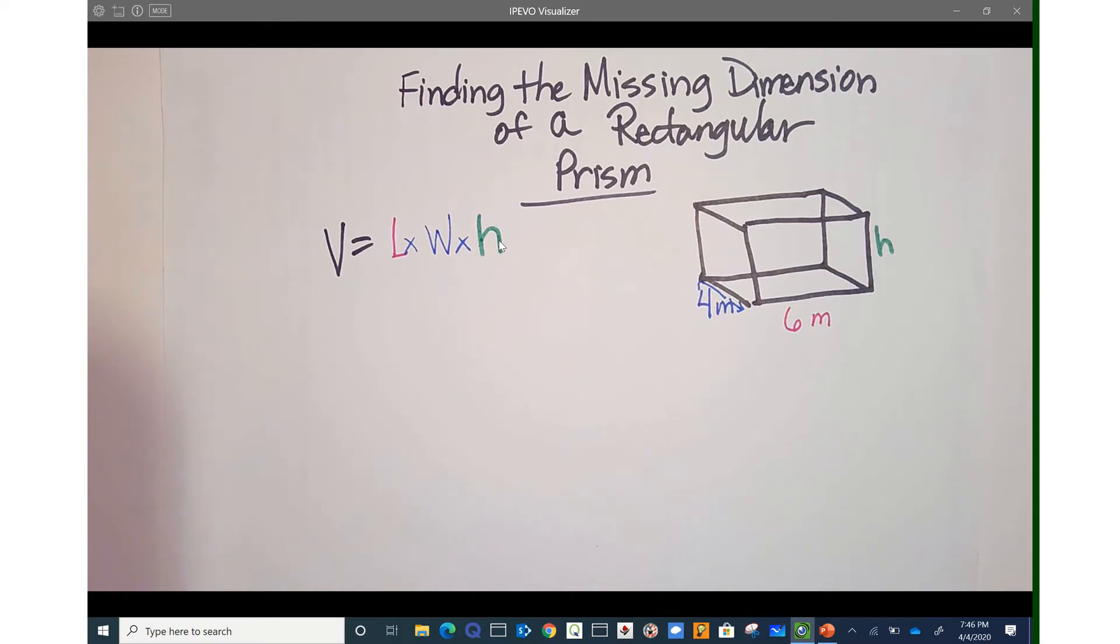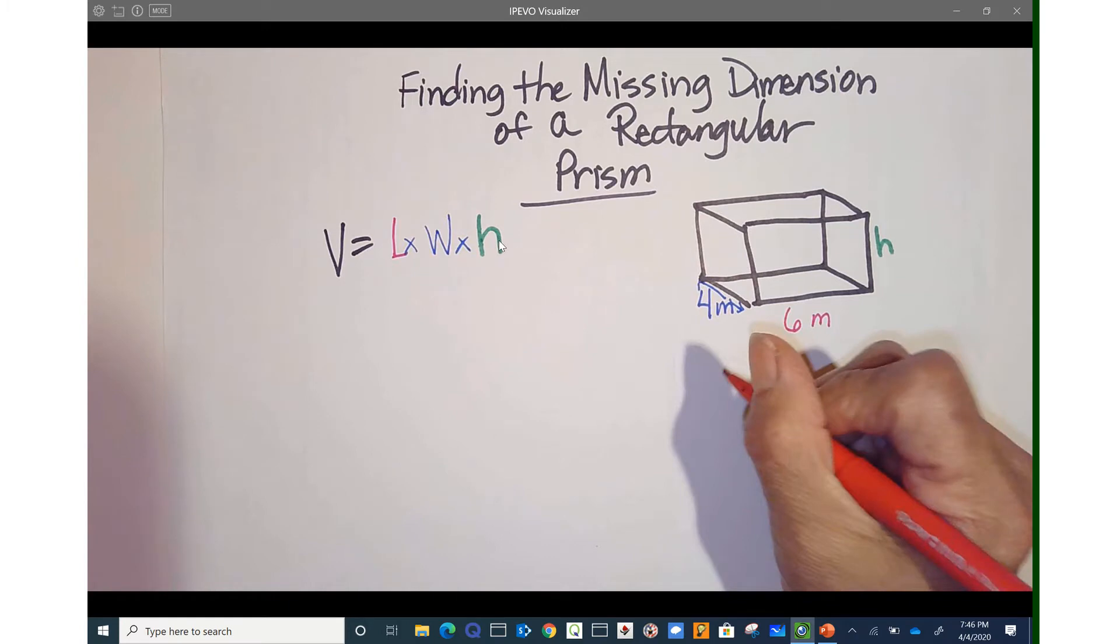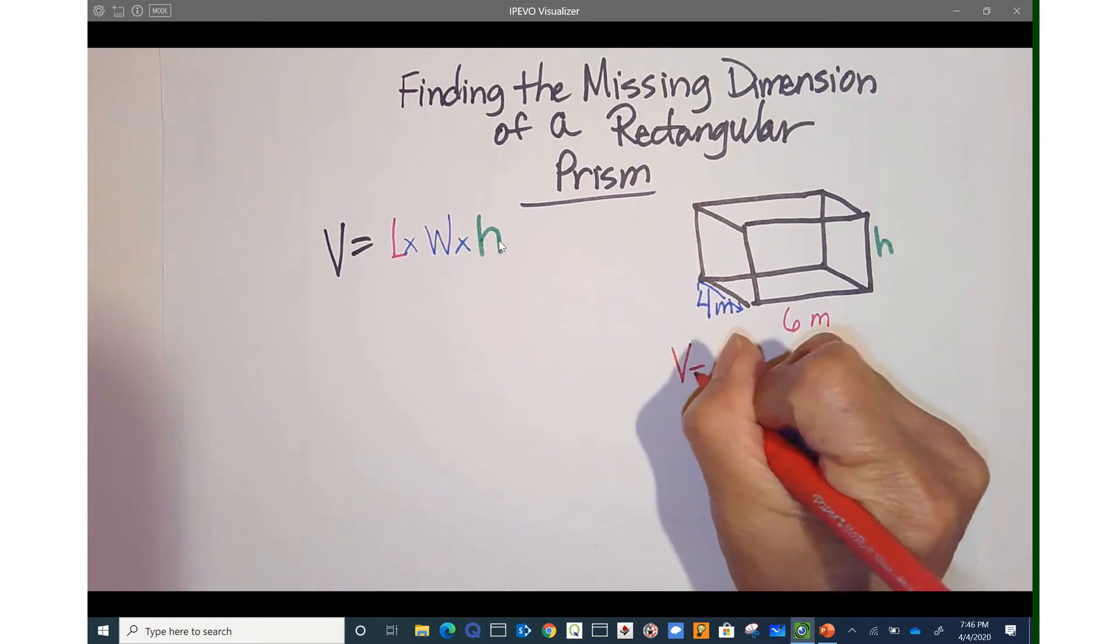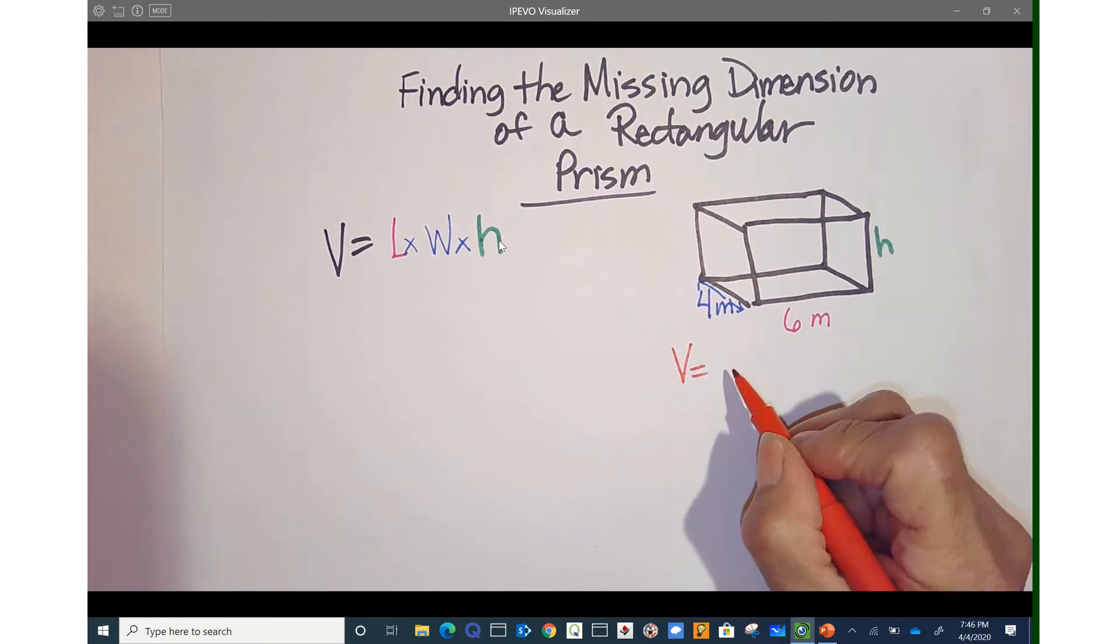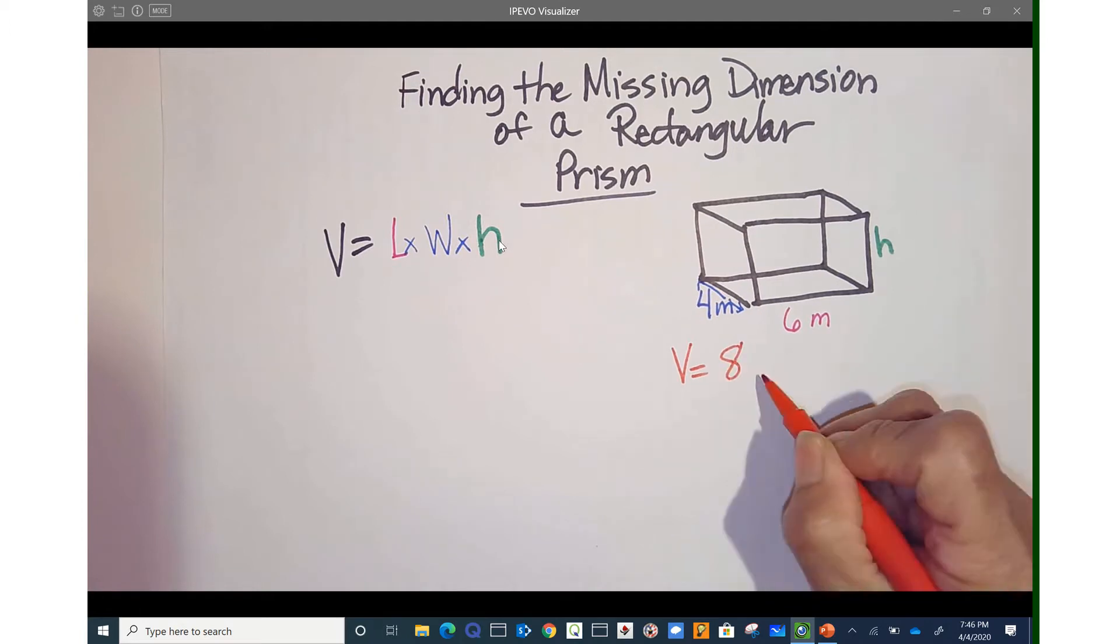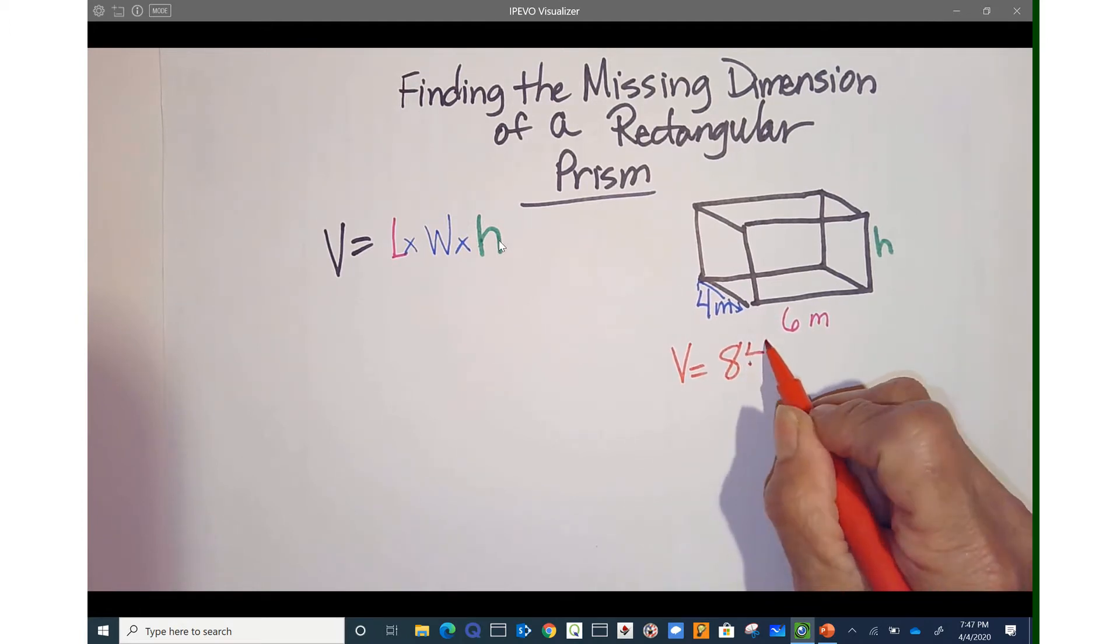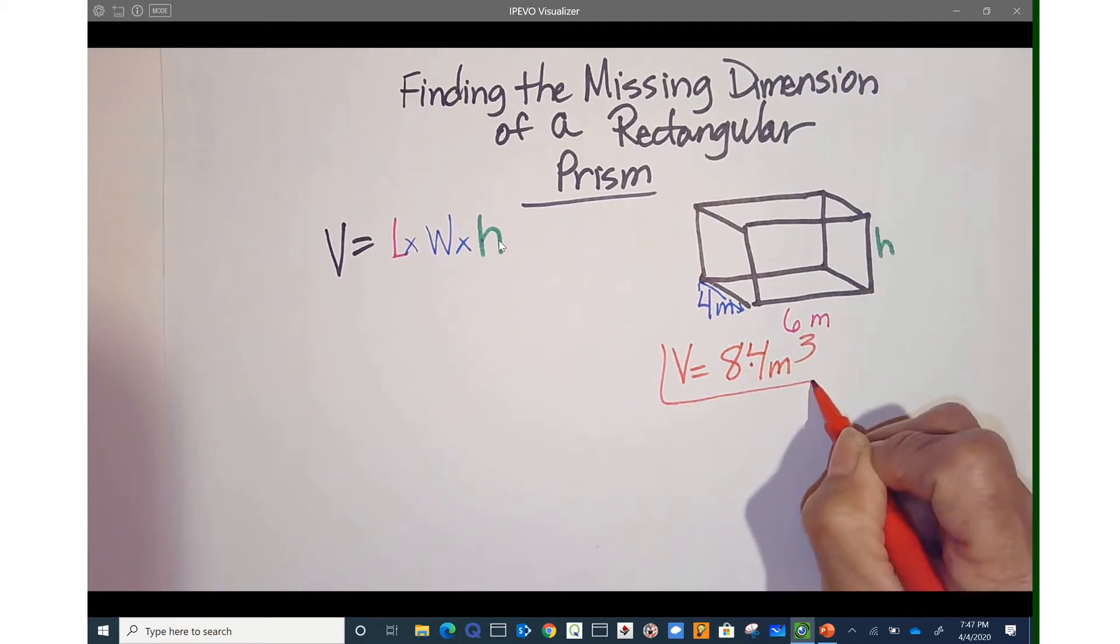Now one thing that I do know is I have my volume because I am looking for a missing dimension. So my total volume is volume equals 84 meters cubed. I already have the volume.